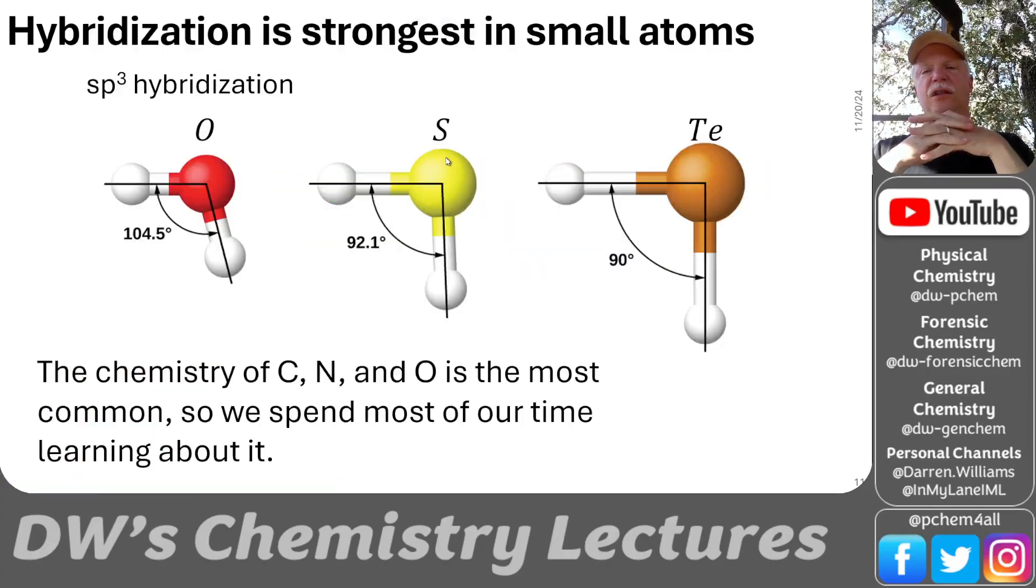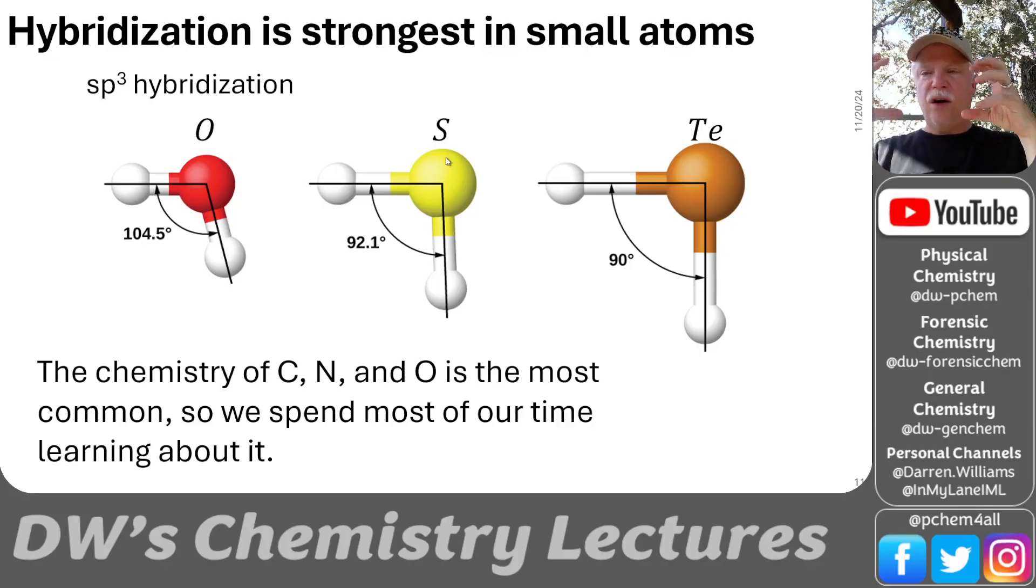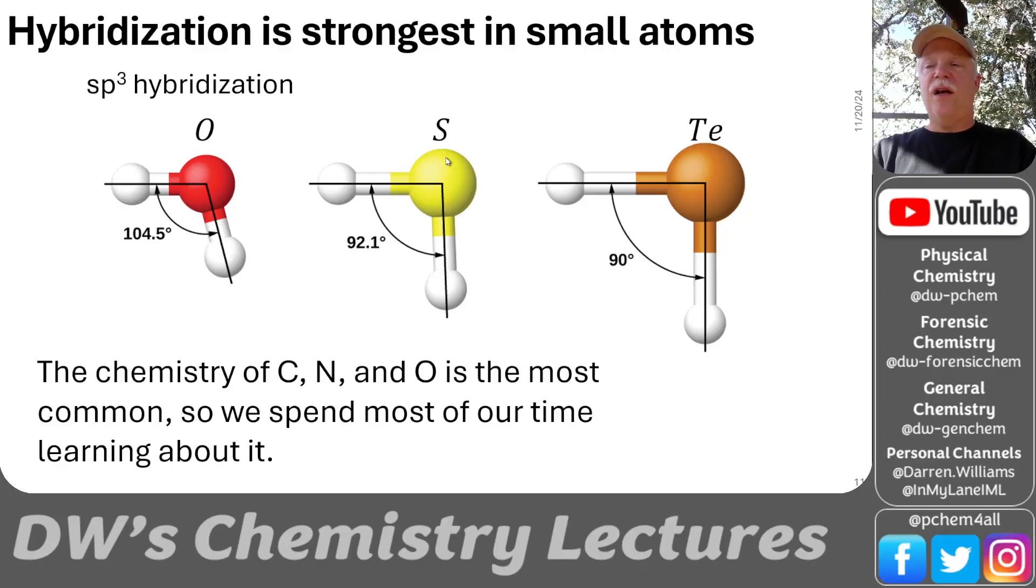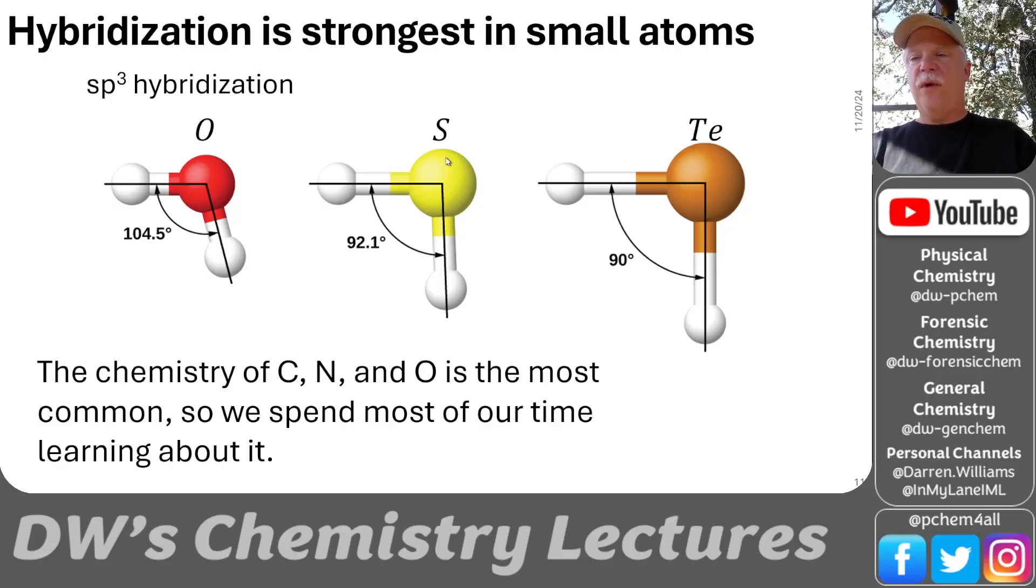Now hybridization is strongest in the smallest atoms because it's harder for those electron groups to get very close to each other. Notice this angle from oxygen, H2O to H2S to H2TE. Notice when it's tellurium, we're just using the p orbitals in tellurium to bond with those hydrogens. They're at 90 degrees. So there's really no hybridization taking place in that enormous tellurium atom. But in oxygen, hybridization is taking place, at least according to this theory. We spend most of our time learning about carbon, nitrogen, and oxygen because most of our molecules and all of organic chemistry is going to be dealing with those atoms the most.